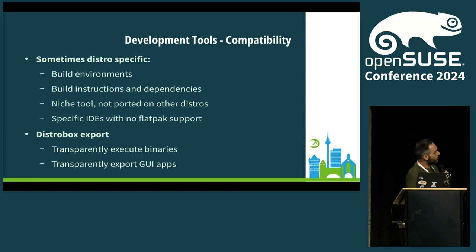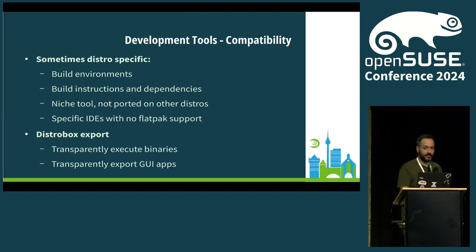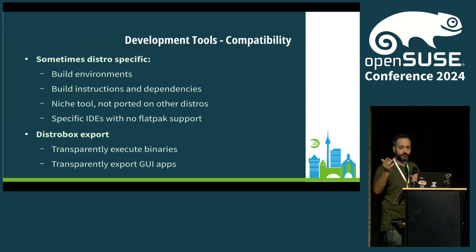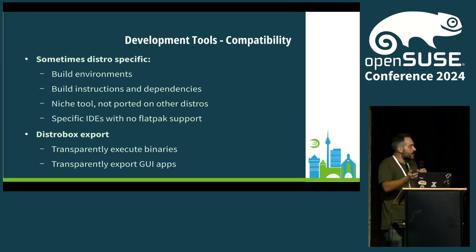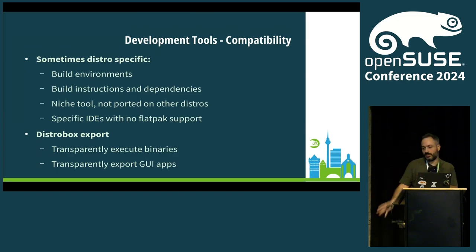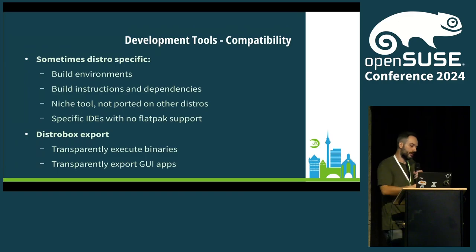Why would you want different environments? Sometimes you find a project where the build instructions are only for Ubuntu 20.04, or a binary is only released for a specific distribution. One example is DaVinci Resolve, which is released only for Red Hat or CentOS. You can create a dedicated container and transparently use it, then use DistroBox export. What it does is export back to the host either a binary or an app — from the host it's a regular binary you just execute, but under the hood it goes through the container to do all the fancy stuff.